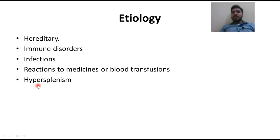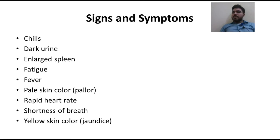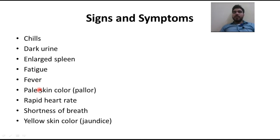Another cause is hypersplenism — enlargement of the spleen due to some physiological disorder. Symptoms of hemolytic anemia include chills, dark urine, enlarged spleen, fatigue due to low energy, pale skin color, rapid heart rate, and jaundice due to liver disorder caused by RBC premature destruction.